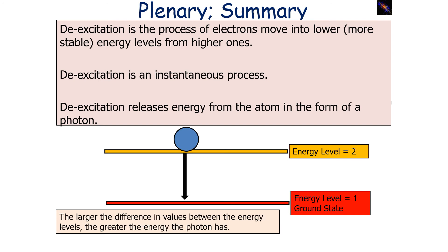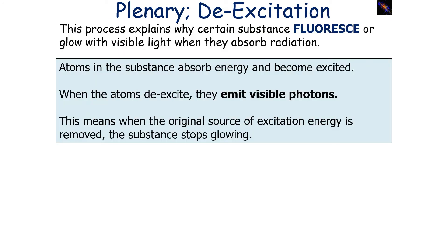The larger the difference in values between the energy levels, the greater the energy the photon has. The smaller the difference, the lower the energy the photon has. This process explains why certain substances fluoresce or glow when they absorb radiation: atoms in the substance absorb energy and become excited, then the atoms de-excite and emit visible photons. When the original source of excitation energy is removed, the substance stops glowing or fluorescing.